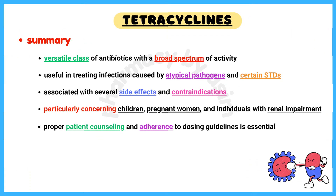In summary, tetracyclines are a versatile class of antibiotics with a broad spectrum of activity, particularly useful in treating infections caused by atypical pathogens and certain STDs. Despite their efficacy, they are associated with several side effects and contraindications, particularly concerning children, pregnant women, and individuals with renal impairment. Proper patient counseling and adherence to dosing guidelines can help mitigate potential risks and enhance therapeutic outcomes.